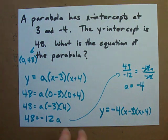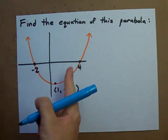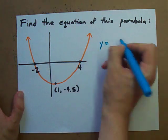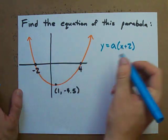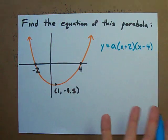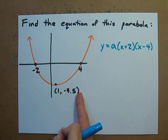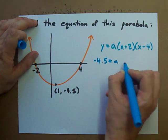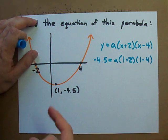We can do this the same way when given an actual graph. The x-intercepts are clearly at 4 and negative 2, so the general form of the equation is y equals a times (x plus 2)(x minus 4). We need a point on the parabola — and we do have one: when x is 1, y is negative 4.5. So we plug in 1 for x and negative 4.5 for y.